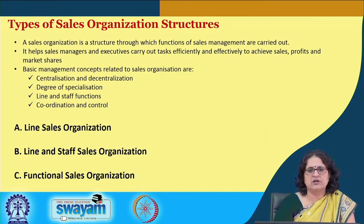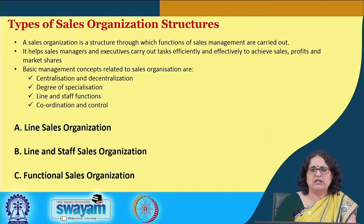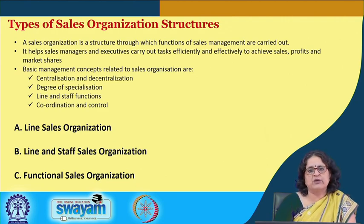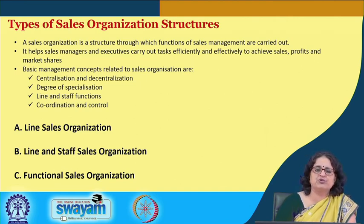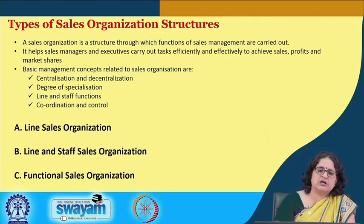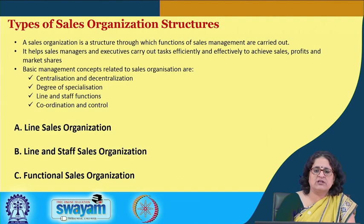When we talk of centralization and decentralization, it is a matter of whether the number of levels in the organization structure are few or many. In centralized structures, especially useful in smaller organizations, one person is able to control many positions, handling several activities, with a large number of people reporting to one person, reducing the number of levels. But in decentralized structures, there are many levels — several layers of superior and subordinate reporting relationships exist — and decision-making power is very decentralized.